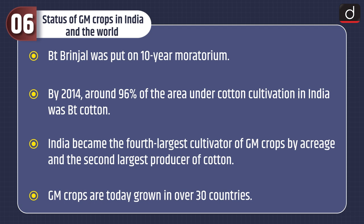By 2014, around 96% of the area under cotton cultivation in India was Bt cotton. India became the fourth largest cultivator of GM crops by area and the second largest producer of cotton. GM crops are today grown in over 30 countries.